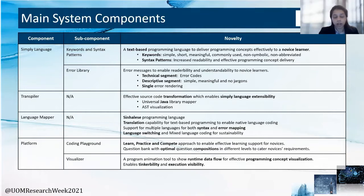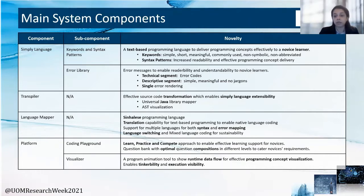Simple programs are transpiled into Java and then executed through a Simply transpiler. The language method is responsible for the translation capabilities for both syntax and error mapping, and it is also the component that allows us to provide the first single native-language programming support. The platform comes with a coding playground which allows users to learn, practice and compete using our programming language, and a visualizer which is a program animation tool that provides runtime data points.